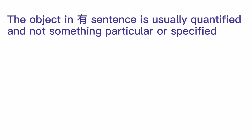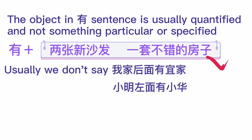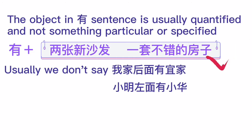Second, the object in a 有 sentence is usually quantified and not something particular or specified. So we can say 有 plus 两张新沙发 or 一套不错的房子 — quantified things. We usually don't say 我家后面有宜家 (Ikea behind my house), because Ikea is something particular and specific.